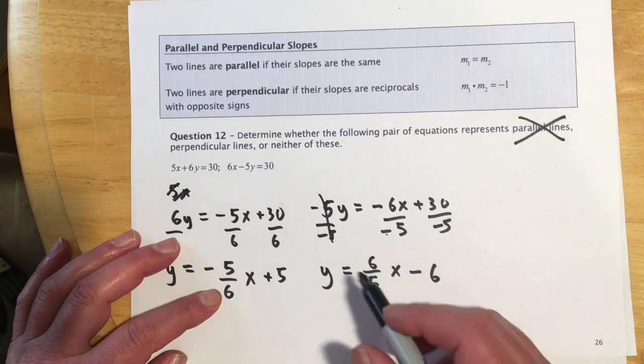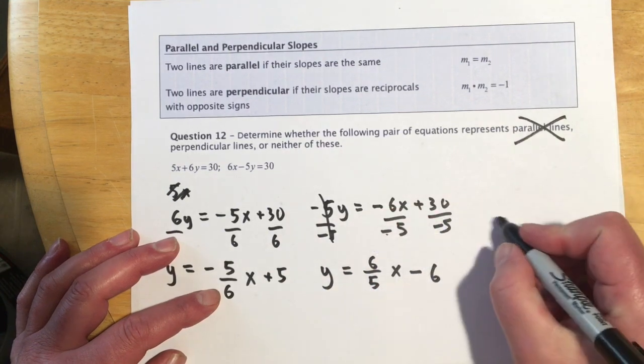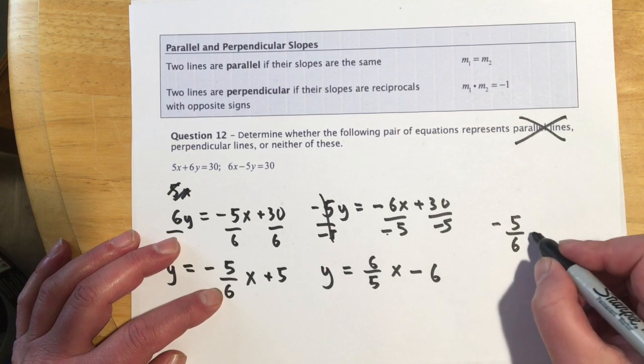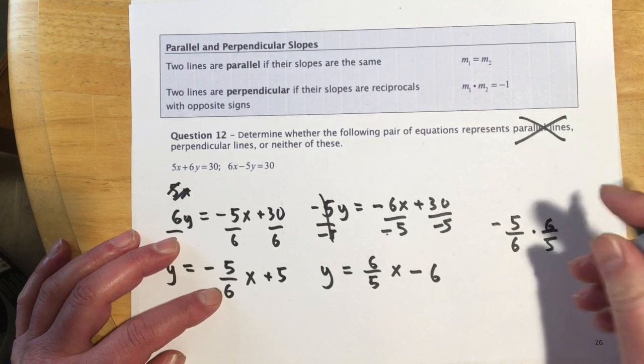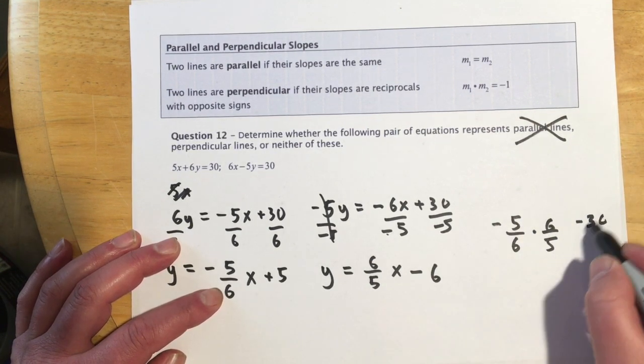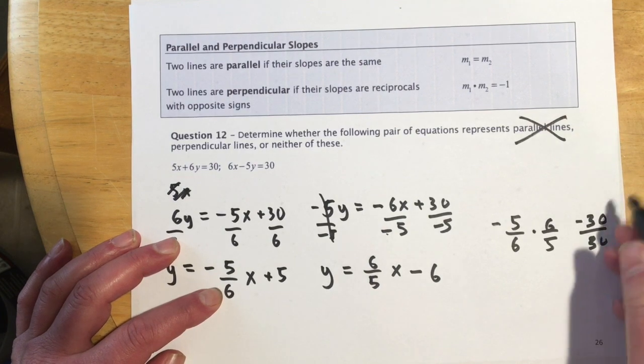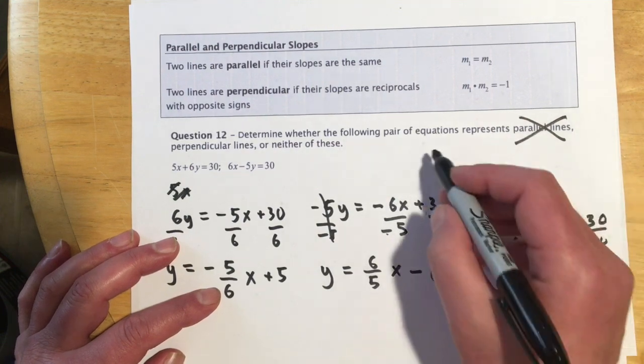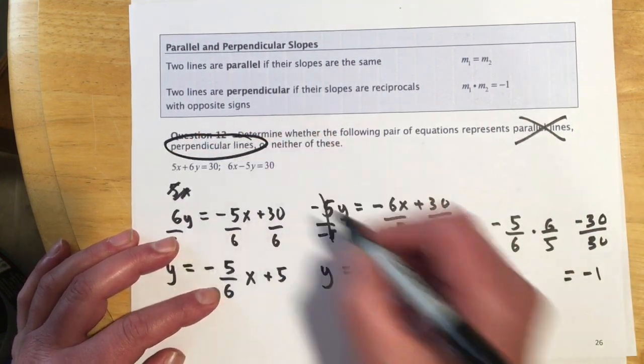So this one is y equals negative negative makes positive 6 fifths x. And then minus 6. So they definitely don't have the same slope. So they are not parallel. If we take the two slopes, they are the reciprocal with opposite signs. We're using this definition. 5/6 for this one negative times 6 fifths for this one makes negative 30 over 30. And then that's how they get the negative 1. So reciprocal with opposite signs. So these ones we would say are perpendicular.